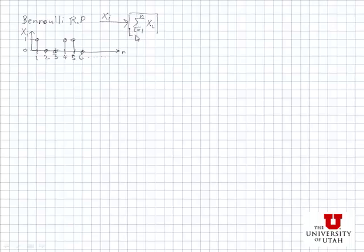Well, what that sum does is it counts the number of successes between time 1 and n. And what do we call the number of successes in a certain number n trials? Well, what we've been calling it is a binomial random variable.